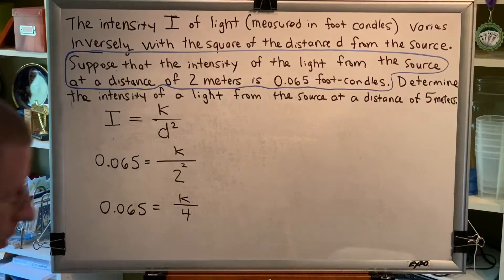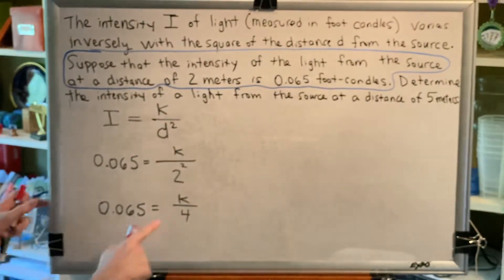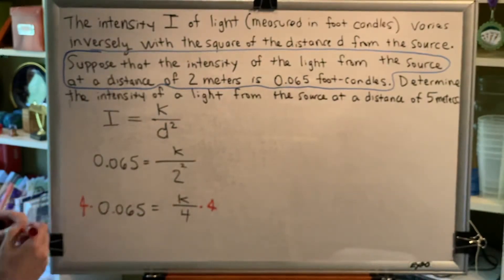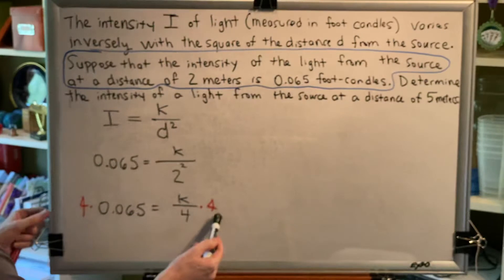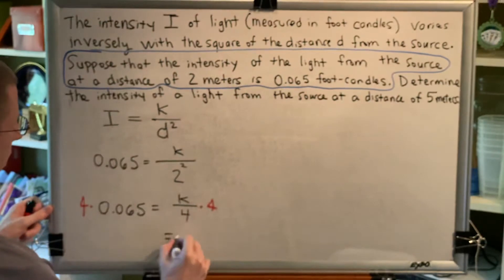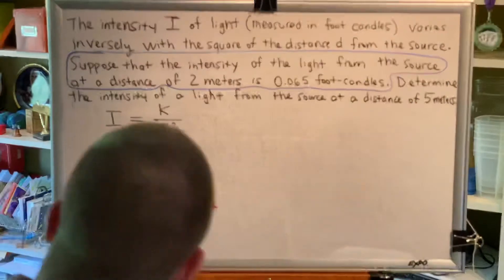We want to get K alone, and so to achieve that, we have to do the opposite of what's happening to K. Right now, K is being divided by 4, so we are going to multiply by 4. Because order does not matter with multiplication, on the right side of the equation, I can multiply by 4 on the right, and on the left side of the equation, I can multiply by 4 on the left. This would not be true for subtraction or division, but it is true for multiplication. All right, so the 4s cancel, and on the right I have K. On the left, I have 4 times 0.065.